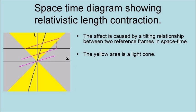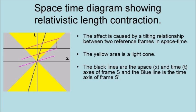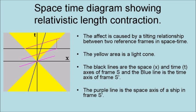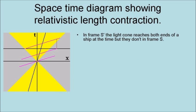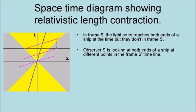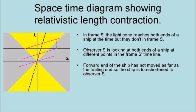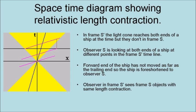The yellow area is a light cone. The black lines are the space and time axes of the S reference frame, and the blue line is the time axis of the S' reference frame. The purple line is the space axis of a ship in reference frame S'. In reference frame S', the light cone reaches both ends of the ship at the same time, but they don't in reference frame S. Observer S is looking at both ends of a ship at different points in the frame S' timeline. As a result, the forward end of the ship has not moved as far as the trailing end, so the ship is foreshortened to observer S. Furthermore, the observer in frame S' sees frame S objects with the same length contraction.